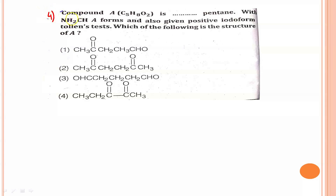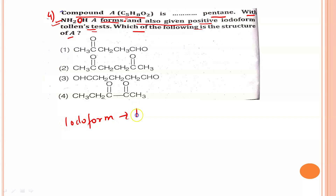The next question says: compound A with molecular formula C5H8O2 reacts with hydroxylamine and gives a positive iodoform test and Tollens test. Which of the following structures is compound A? We can directly see that it gives a positive iodoform test — which is shown by a methyl ketone or isopropyl alcohol — and also a positive Tollens test.